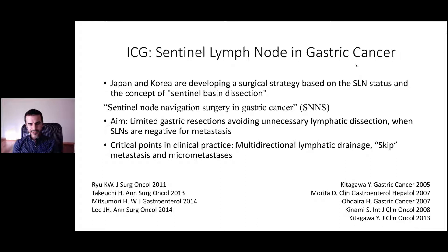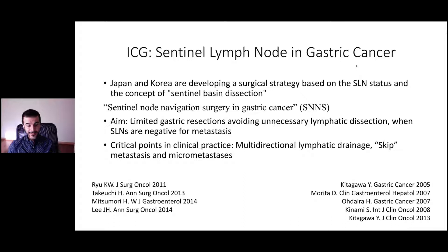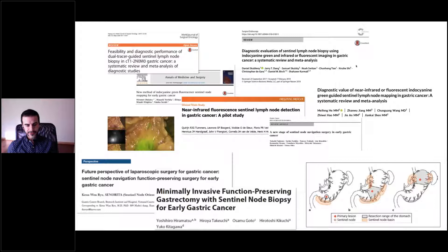Regarding sentinel lymph nodes in gastric cancer, colleagues in Japan and Korea are developing a surgical strategy based on sentinel lymph node status and the concept of sentinel basin dissection. This involves removing at least five sentinel nodes, with the main aim of enabling limited gastric resections avoiding unnecessary lymphatic dissection when sentinel lymph nodes are negative for metastasis. Critical challenges include multi-directional lymphatic drainage of the stomach, skip metastasis up to 12%, and micrometastasis. There are multiple publications on this topic but it is still under investigation.